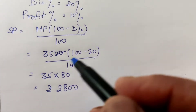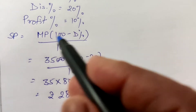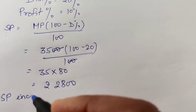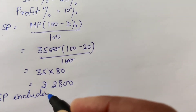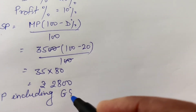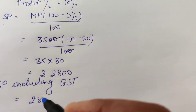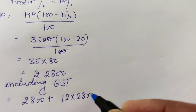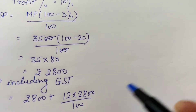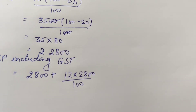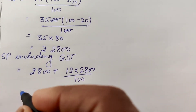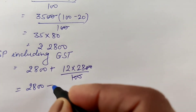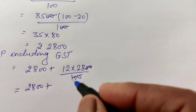Now we calculate the selling price including GST. Selling price including GST equals selling price before GST plus 12 percent of 2800. That is 2800 plus 12 percent of 2800.